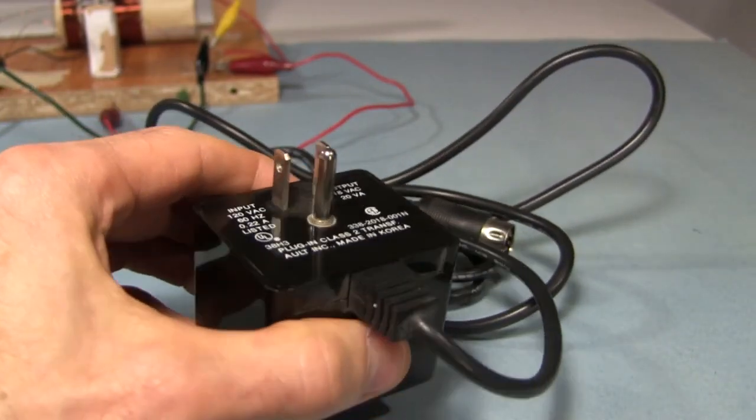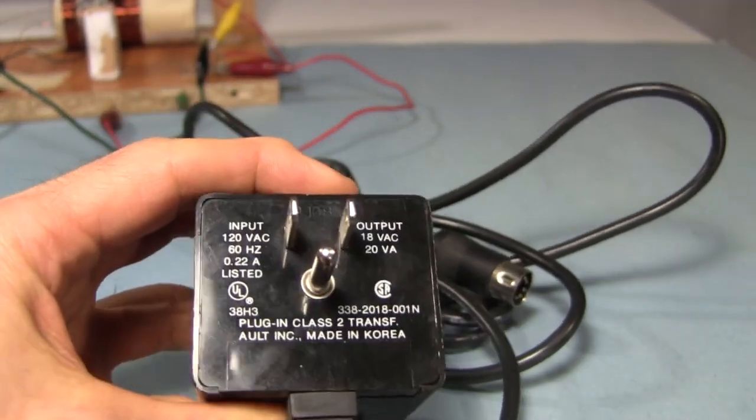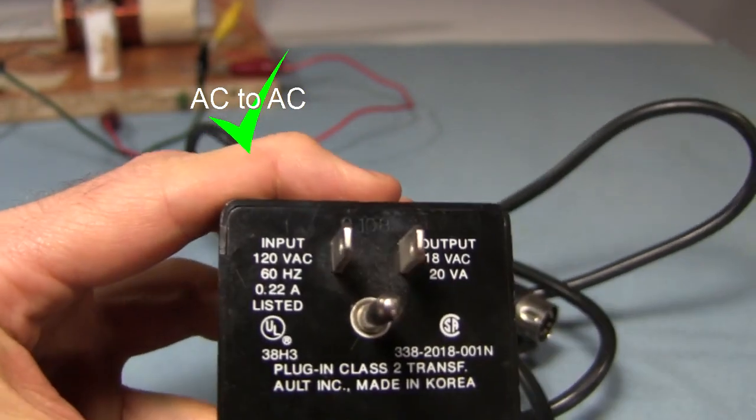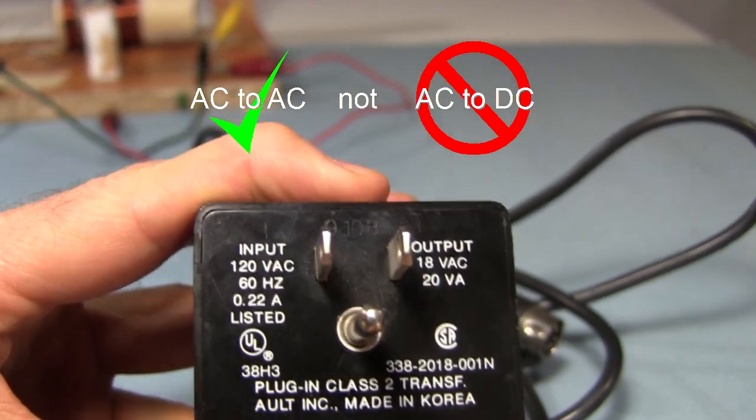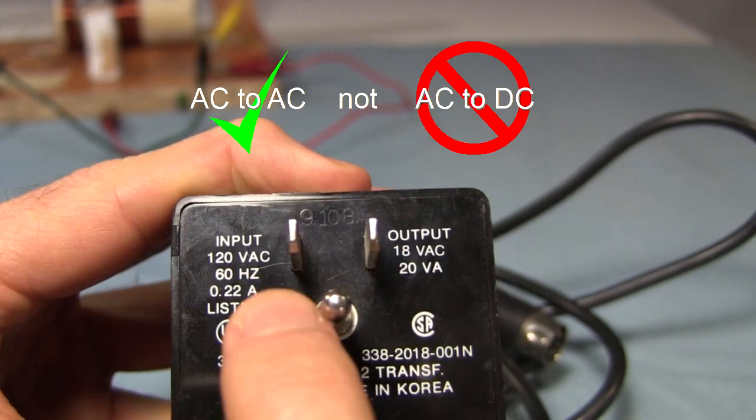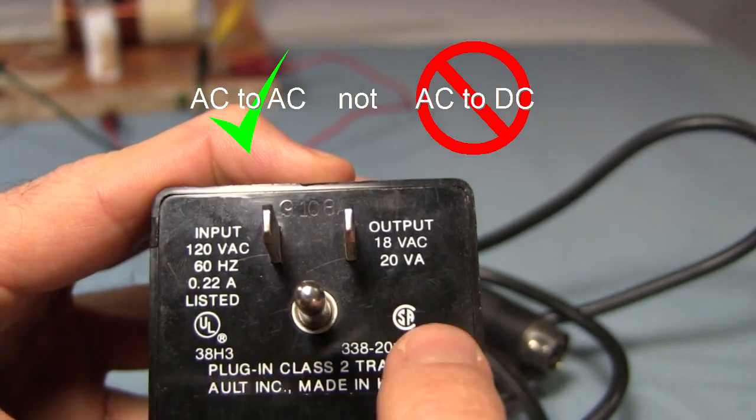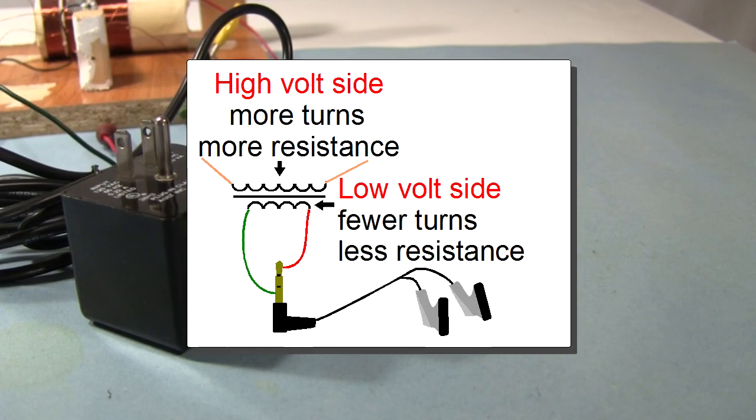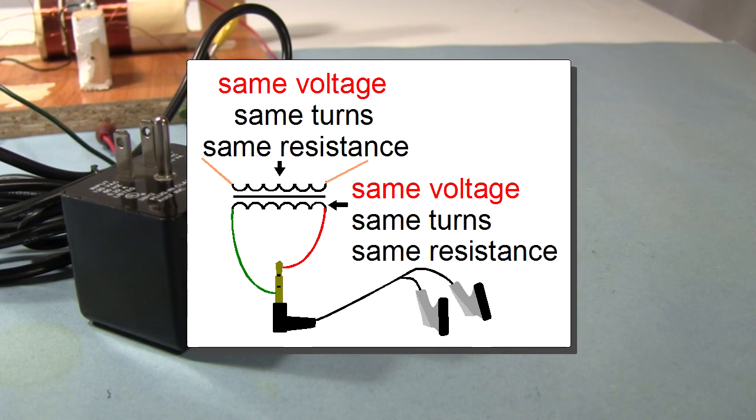And totally you can use wall adapters too, since some wall adapters are just transformers. But make sure you get ones that are AC to AC and not AC to DC. For example, this one right here says 120 volts AC and 18 volts AC. So it's AC to AC. But I'm told you can use small one-to-one transformers as well. Those are ones where the input coil and the output coil are the same.